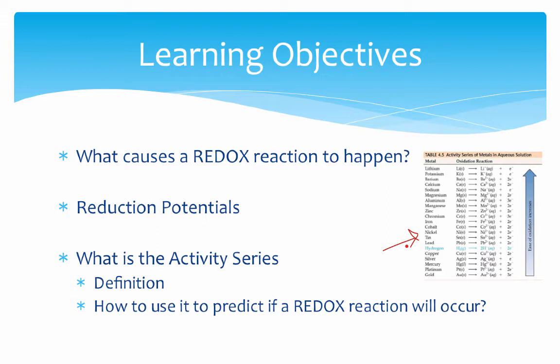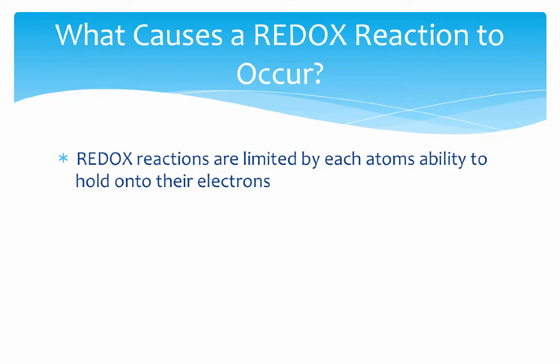Just like when we looked at precipitation reactions, we used solubility rules to decide if a precipitate will or will not form. So we'll begin with a discussion of what causes an actual redox reaction to occur or not.